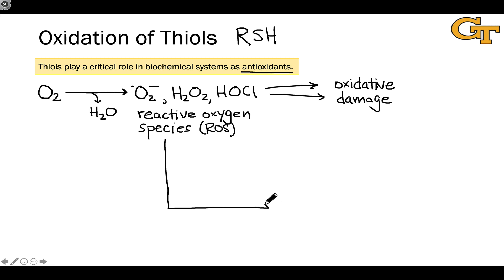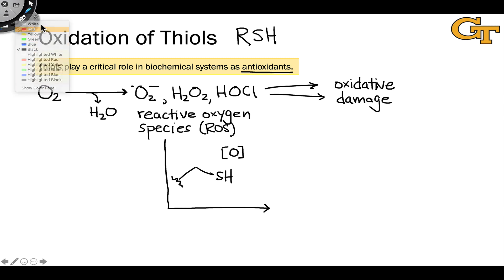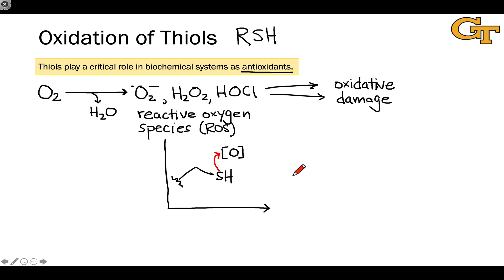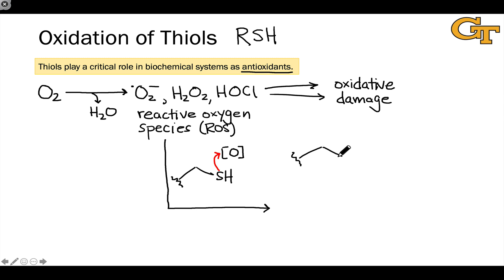The basic idea is that the thiol sulfhydryl group — the SH group — which we find in cysteine, many of which are located in specialized enzymes for this purpose, can be oxidized to different types of acids as S-O bonds are formed. The nucleophilic sulfur atom coordinates to some electrophilic source of oxygen in an elementary step like association of a nucleophile or even SN2. This can happen once, twice, or even three times.